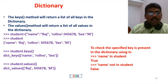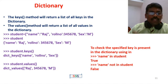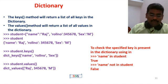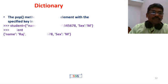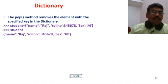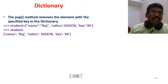Use the 'in' and 'not in' commands to check membership. For example: 'name' in student — if name is present, returns True. 'name' not in student returns False. Next, to remove elements, use the pop() method, which removes the element with the specified key.